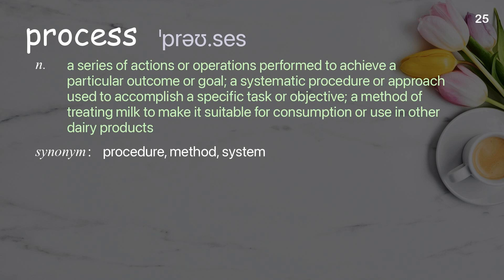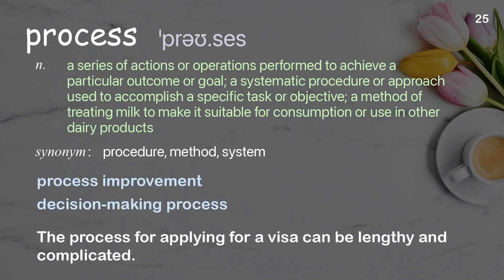Process: a series of actions or operations performed to achieve a particular outcome or goal; a systematic procedure or approach used to accomplish a specific task or objective. Examples: process improvement, decision-making process. The process for applying for a visa can be lengthy and complicated.